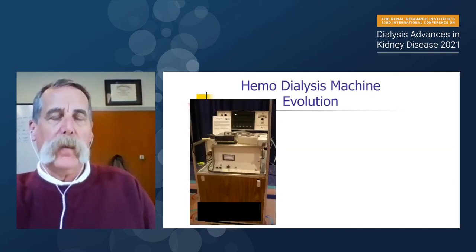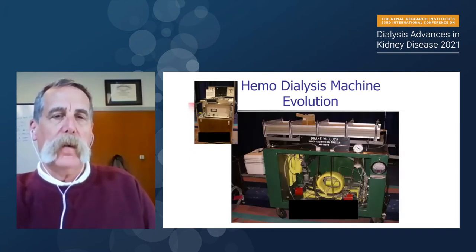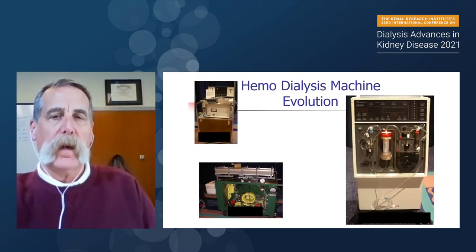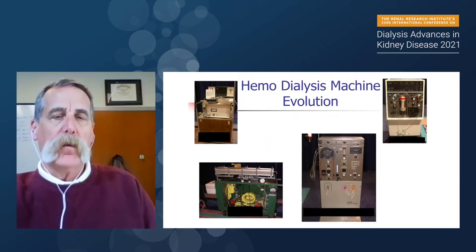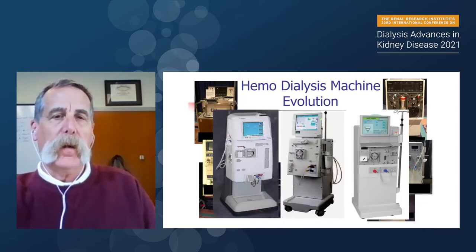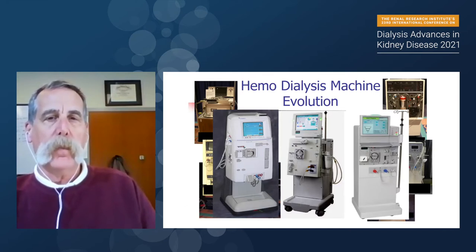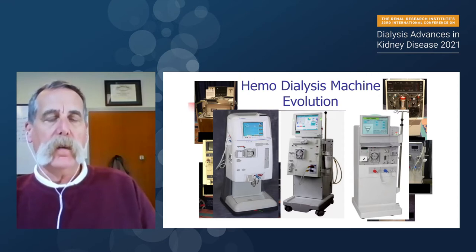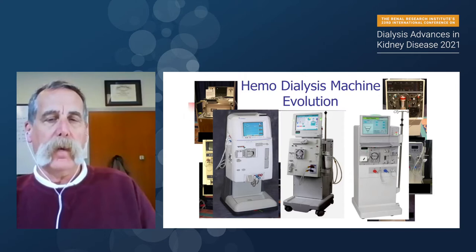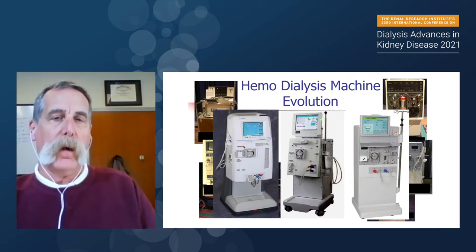These are machines that have been available over the last three or four decades of hemodialysis, most of which we now find only in archives. The present machines are primarily used across the world, made by Fresenius, B. Braun, or Baxter. These common machines have online UF correlation, the ability to do accurate UF control within about one to two percent, and online sodium modeling.